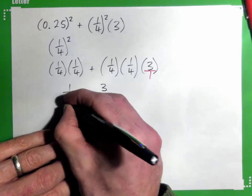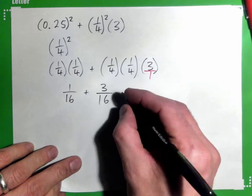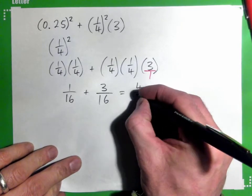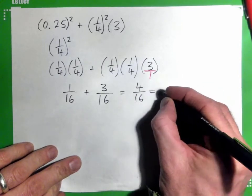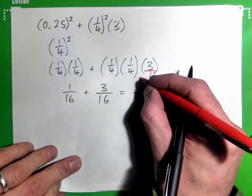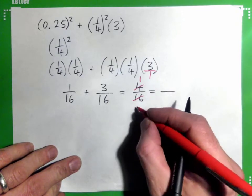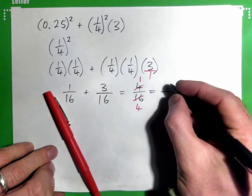So, I have 1/16 plus 3/16. What does that make? So, we've got 4/16. And can I simplify that? Alright, so 4 into 4 goes once, 4 into 16 goes 4 times, right? So that's a quarter.